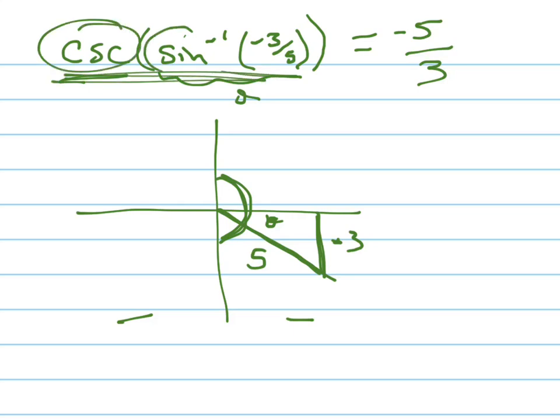If this cosecant and sine inverse, you just basically flip that. That's the pattern that you'll notice. But what if you have something like this? What if instead of cosecant, what if it said secant of the sine inverse of negative three-fifths? That's a more complicated problem.